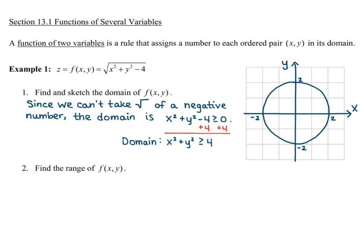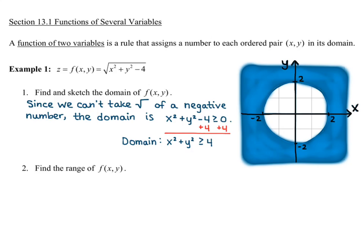I'm going to draw in my circle of radius 2. The issue is that x squared plus y squared has to be greater than or equal to 4, meaning we're talking about the outside of the circle. With an inequality, you shade in whatever area you're talking about, so we have the whole area outside of the circle shaded in, and that includes the circle itself because of the 'or equal to' in the domain. There's our graph of the domain of f(x, y).